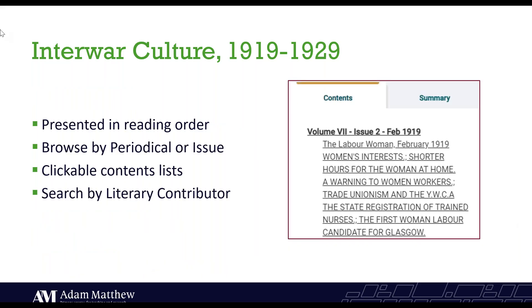Interwar Culture is unlike any other periodical resource currently available online. It is highly browsable with material presented as close to original reading order as possible. You can choose the browsing style that best suits your research, whether that's by periodical or by individual issues for a more granular approach. Volumes are fully sectioned as well, which allows you to jump between issues with a single click. We also have clickable contents lists within each volume that will take you directly to your chosen article. We also have a literary contributor search tool, allowing you to easily search the periodicals by key authors of the decade, such as HG Wells, Vera Brittain and Arthur Conan Doyle, amongst roughly 800 others.